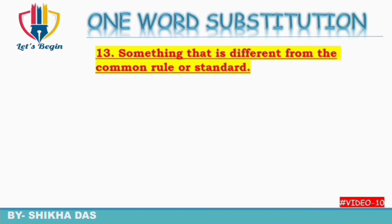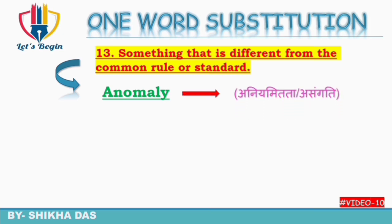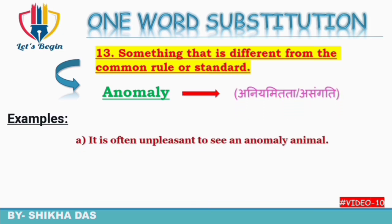Question number 13: something that is different from the common rule or standard — common rule se ya standard se kuch alag hona. Usko kaha jata hai 'anomaly'. Anomaly ko Hindi mein kehte hain 'aniyamittha' ya 'asangati'.